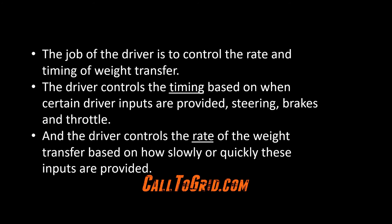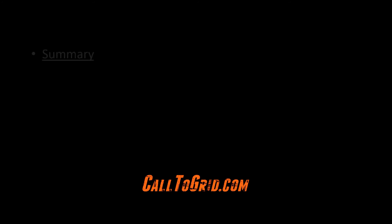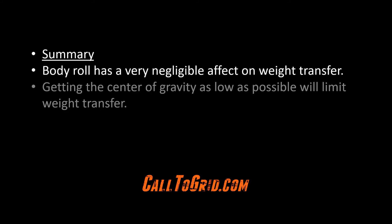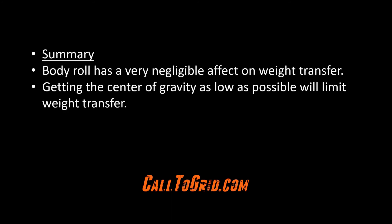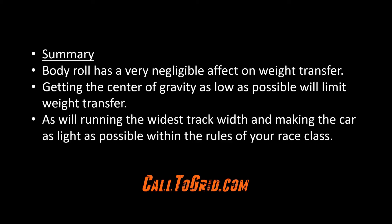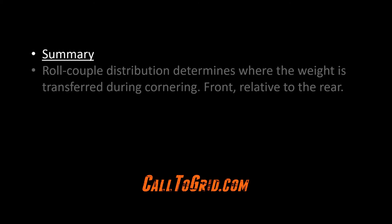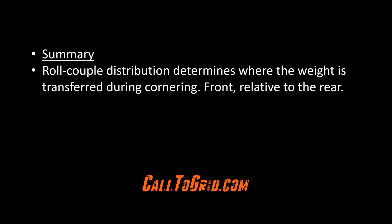In summary, body roll has a very negligible effect on weight transfer. Getting the center of gravity as low as possible will limit weight transfer, as will running the widest track width and making the car as light as possible within the rules of your race class. Roll couple distribution determines where the weight is transferred during cornering, front relative to the rear.